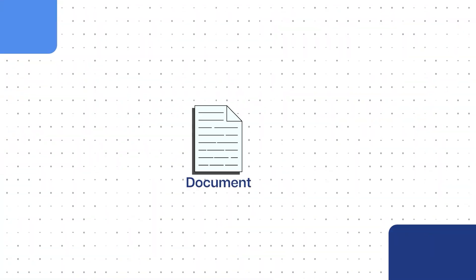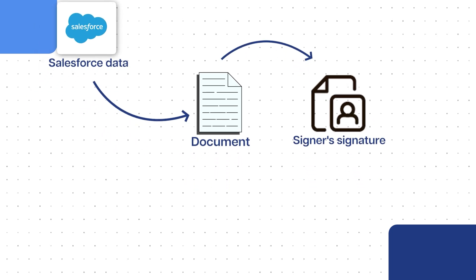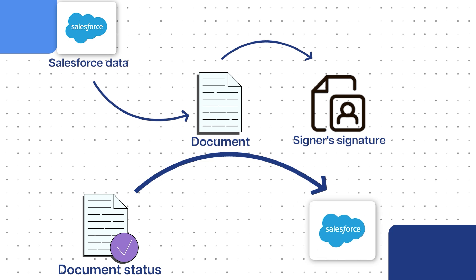Overall, setting up an integration between Salesforce and DocuSign helps you create documents with your Salesforce data, send them for signature, and track the status of the signature directly from within Salesforce without having to log into DocuSign. And when the documents are signed, the signed PDFs and the data that your signers might have entered in forms will synchronize back inside of your Salesforce record.